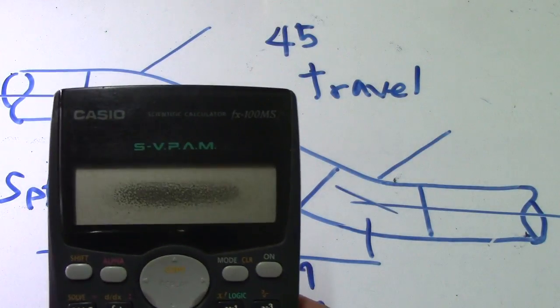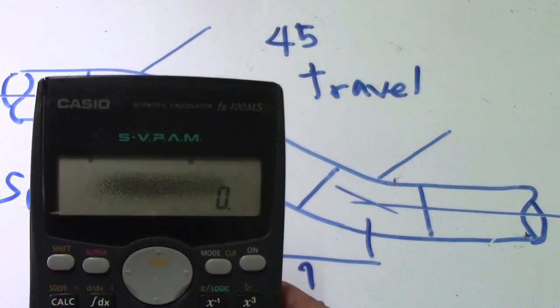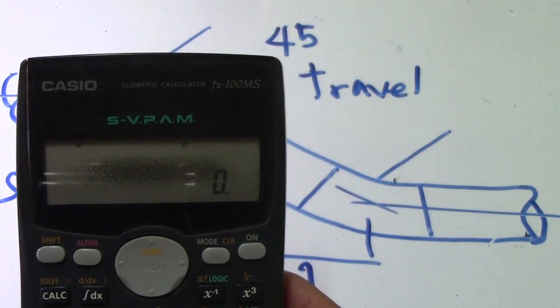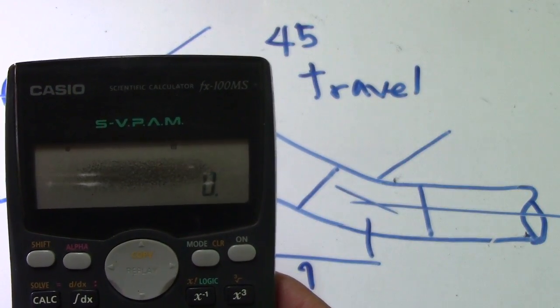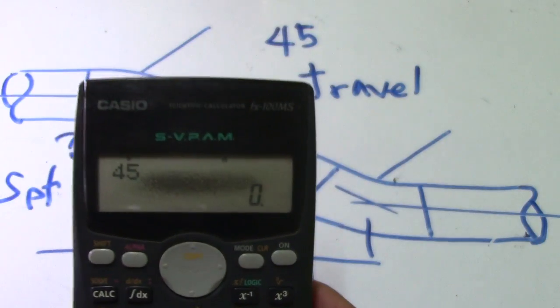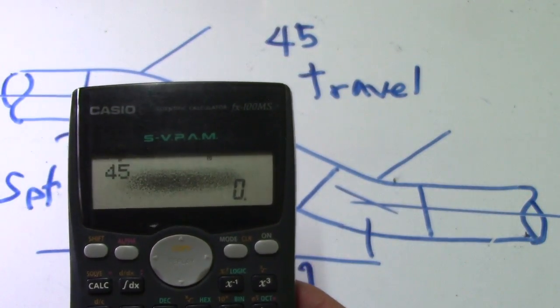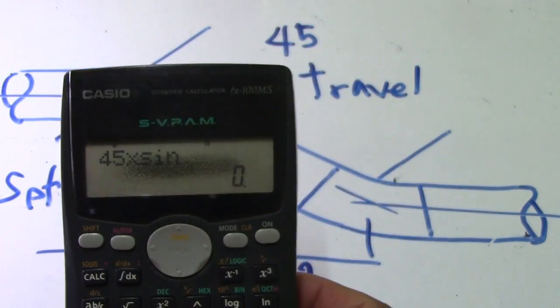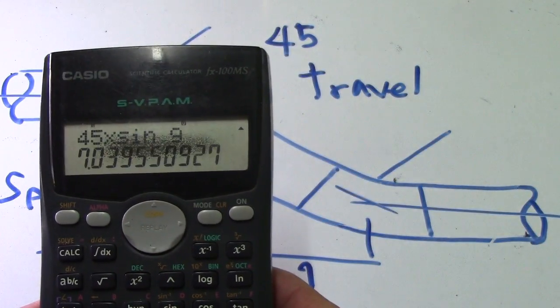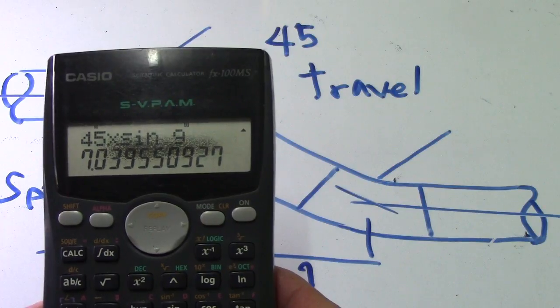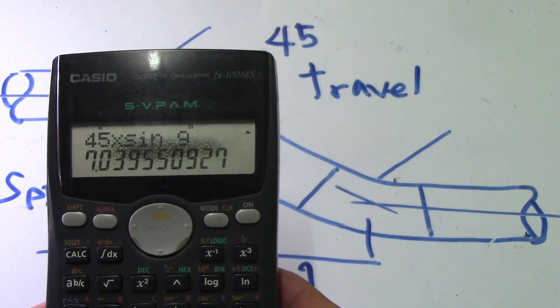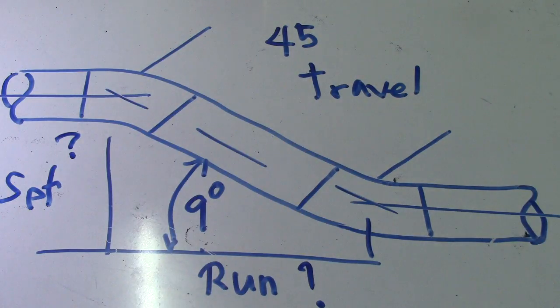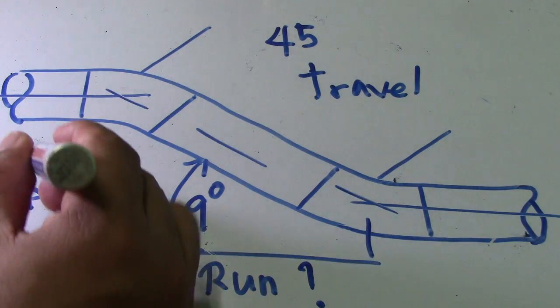Using my calculator, I will show you how. Travel is 45, so multiply it by sine 9 degrees. This is the answer for the set: 7.07.